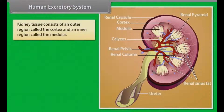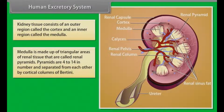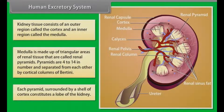Kidney tissue consists of an outer region called the cortex and an inner region called the medulla. The medulla is made up of triangular areas of renal tissue called renal pyramids. Pyramids are 4 to 14 in number and separated from each other by cortical columns of Bertin. Each pyramid surrounded by a shell of cortex constitutes a lobe of the kidney.